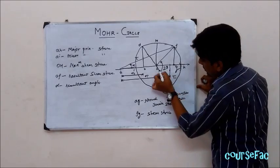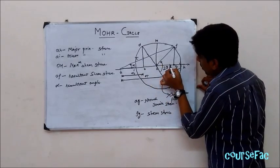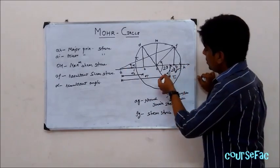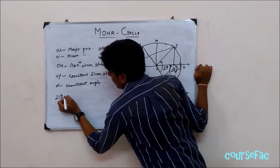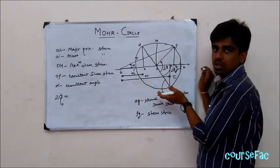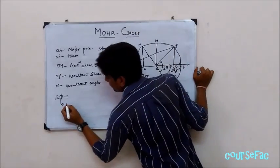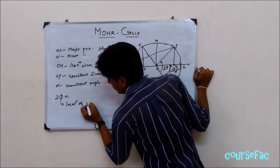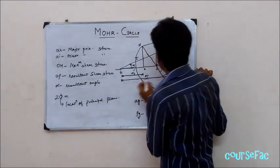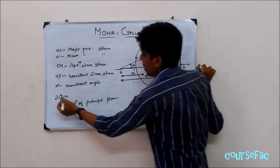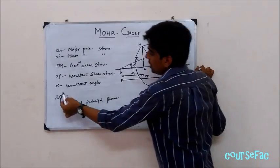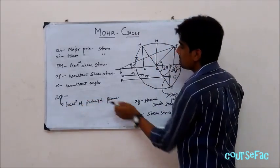The reference point makes an angle of 2 phi with the horizontal axis, where phi is the location of the principal plane. This angle 2 phi represents twice the angle of the location of the principal plane.